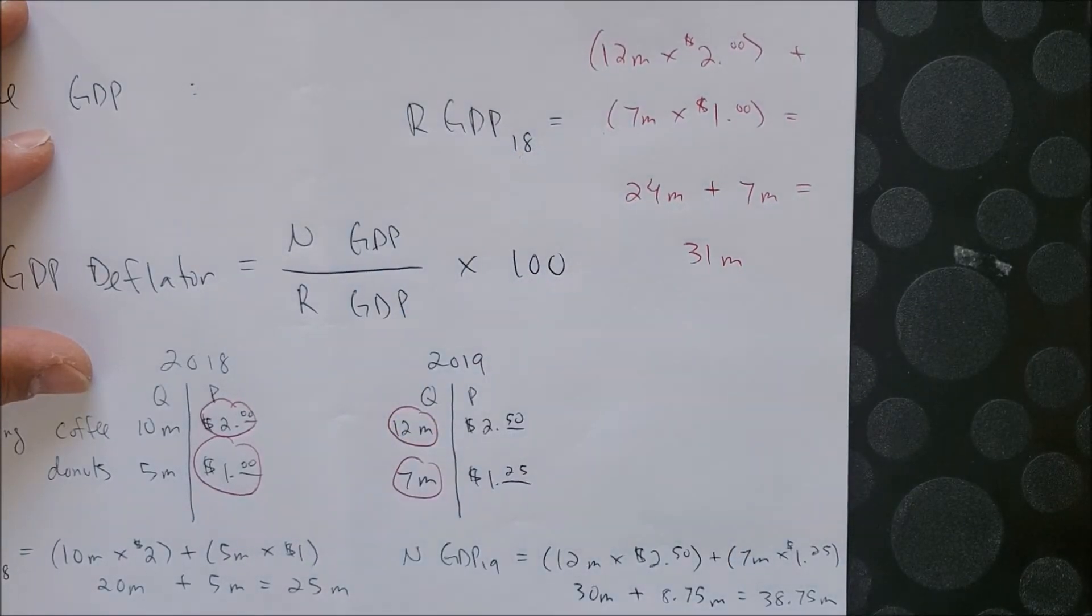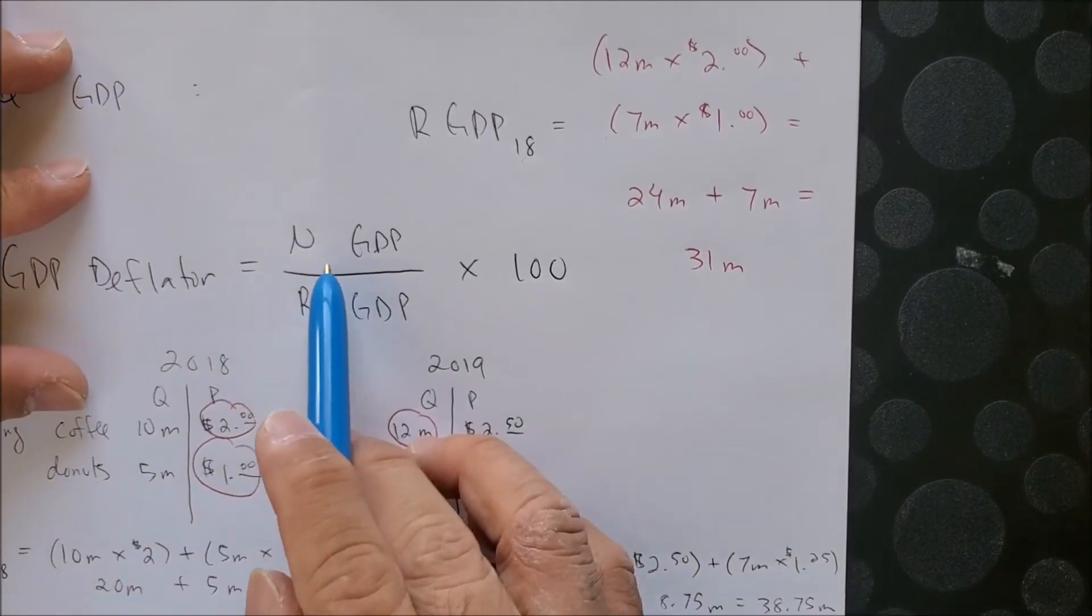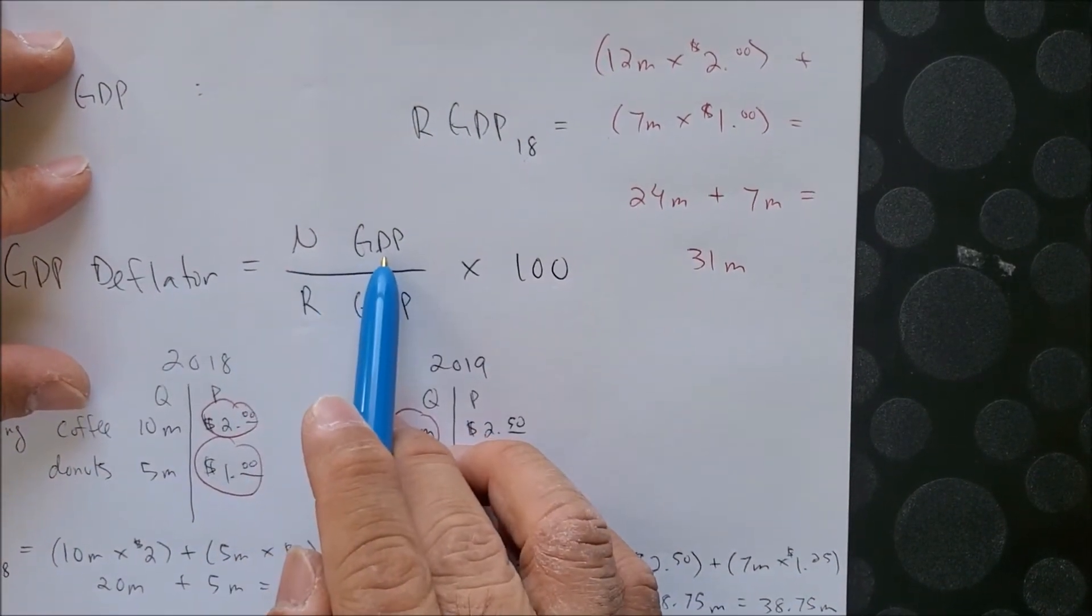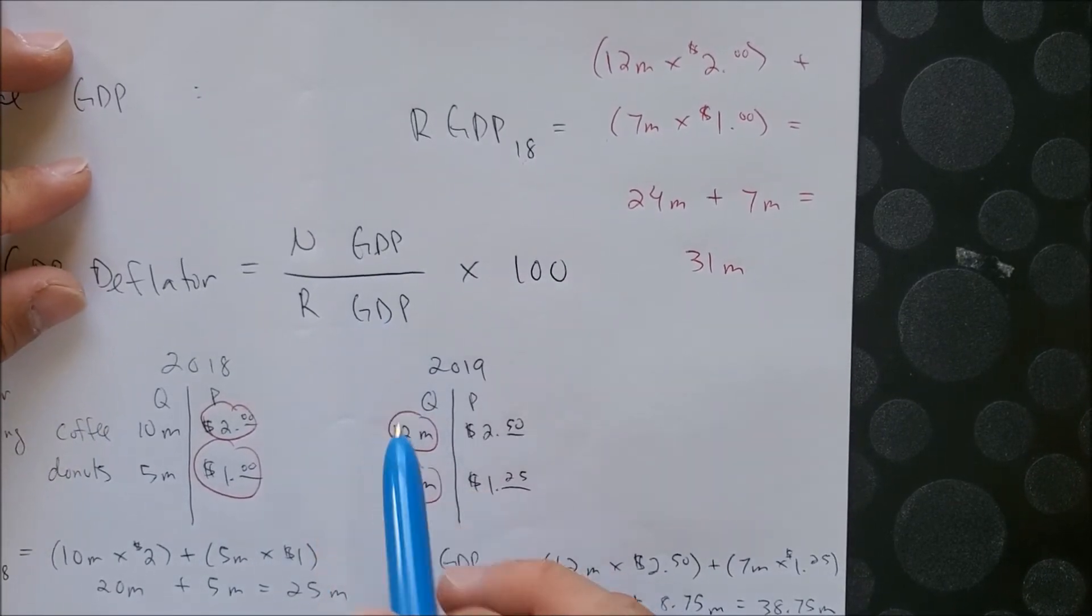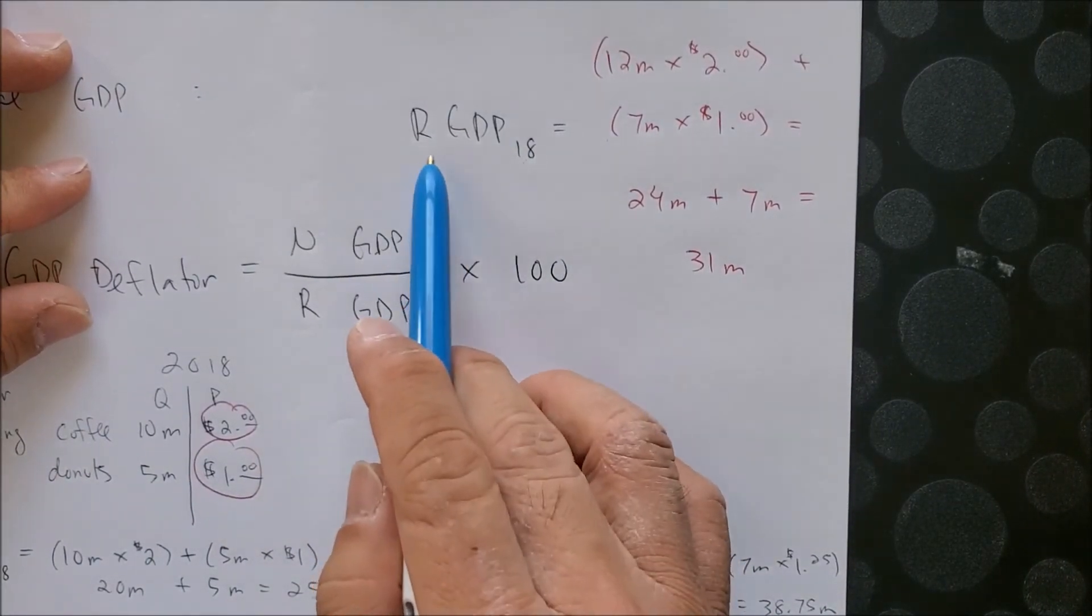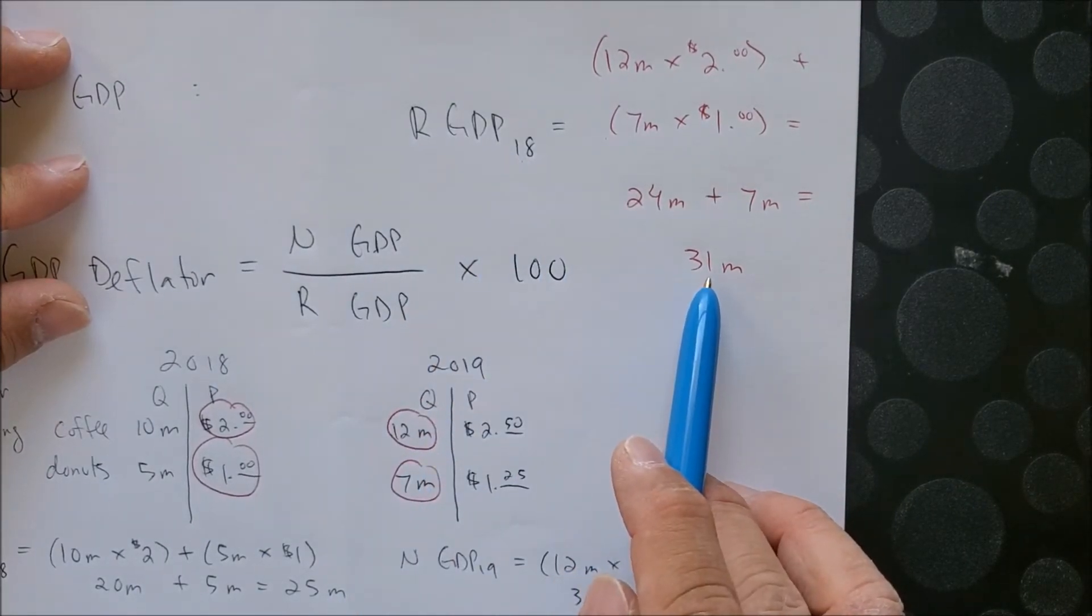So once we have what we need, which would be the nominal GDP and the real GDP, now what we can do is just plug in what we have. We have real GDP base year 2018 at 31 million, and we also have the nominal GDP of 2019 at 38.75.